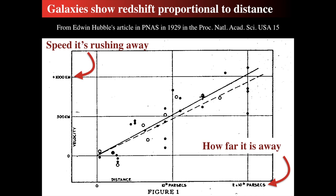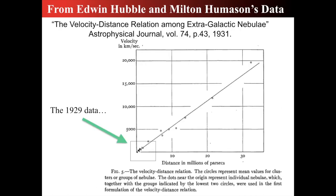This is from his 1929 Proceedings of the National Academy of Sciences. His data show that the farther away something is — that's the x-axis — the faster it's rushing away, on the y-axis. A couple years later he published more in the Astrophysical Journal, finding galaxies much further out, up and to the right. That linear relationship — the farther away something is, the faster it's rushing away from us — became a universal thing and one of the great discoveries of the cosmos. The universe didn't have to be expanding, but this is what the discovery showed.